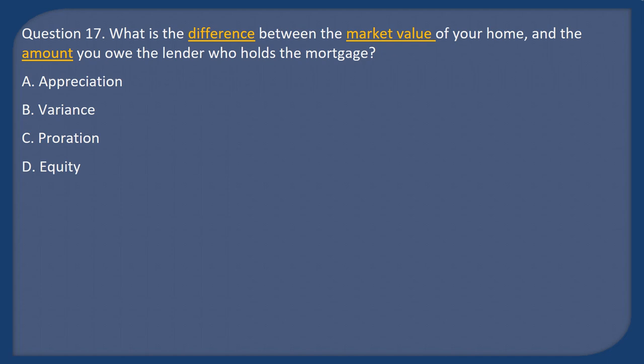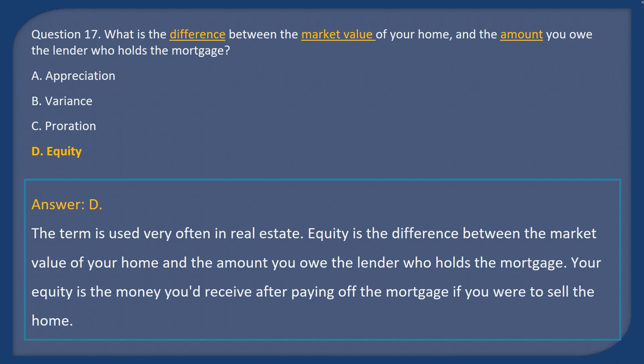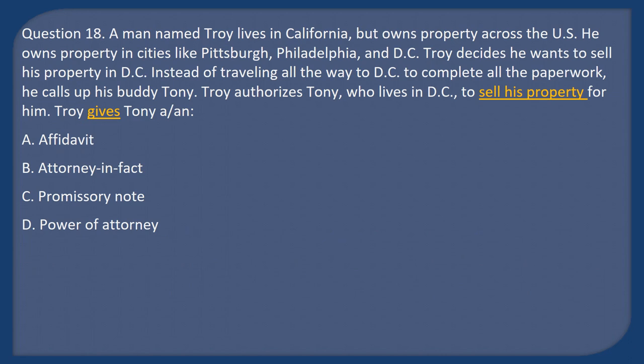Question 17: What is the difference between the market value of your home and the amount you owe the lender who holds the mortgage? A) Appreciation, B) Variance, C) Proration, D) Equity. Answer: D. Equity is the difference between the market value of your home and the amount you owe the lender. Your equity is the money you'd receive after paying off the mortgage if you were to sell the home.